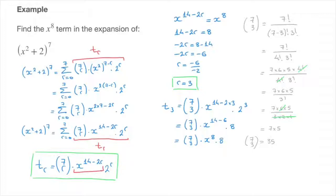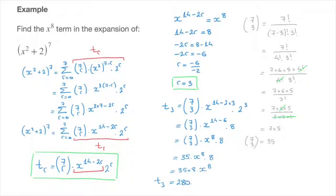The general term when r equals 3 is equal to 35 times x to the power of 8 times 8, which equals 35 times 8 times x to the power of 8. Finally, T3 is equal to 280 times x to the power of 8. We now have the x to the power of 8 term in this binomial expansion.